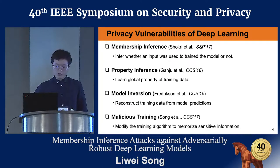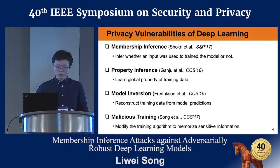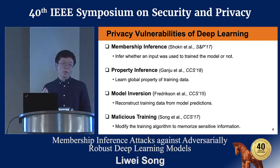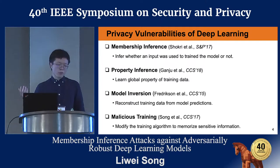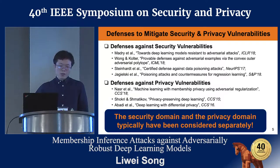From the privacy part, many papers have come out in recent years trying to reveal privacy issues of deep learning models. We have the membership inference attack, where the adversary tries to guess whether an input was from the training dataset. We also have the property inference attack, where the adversary tries to learn some global property of the whole training dataset. And we have the model inversion attack, where the adversary tries to reconstruct meaningful inputs from model predictions. We can also assume the ML model provider is the adversary, who could maliciously modify the training algorithm to memorize sensitive information.